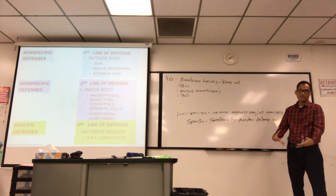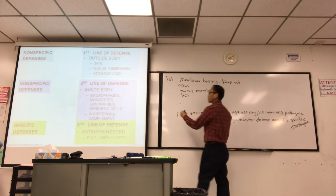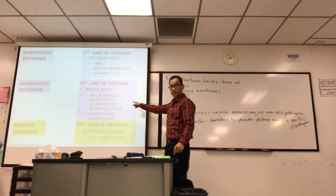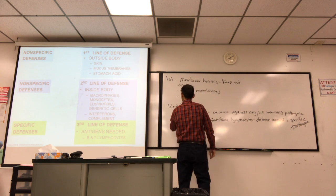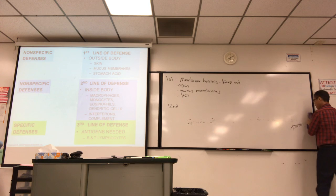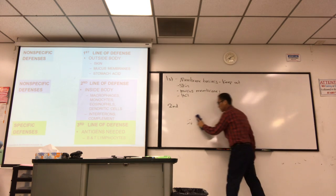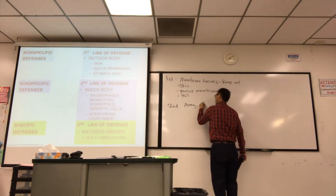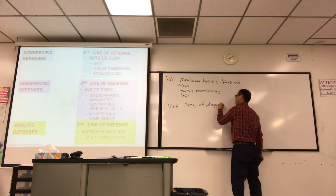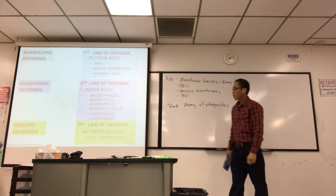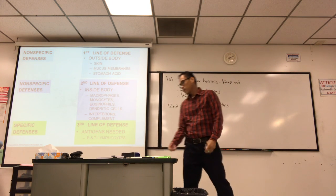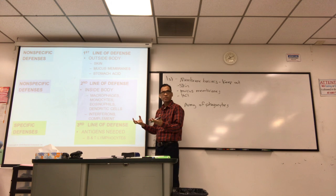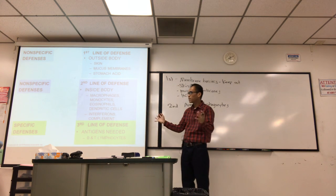But let's say it gets in your body, it's in your bloodstream, in your connective tissues. Then what's the second line of defense if it gets past the first line? Inside the body, your non-specific defenses. It's like your army of phagocytes. It has an ability to recognize anything non-self and destroy it.